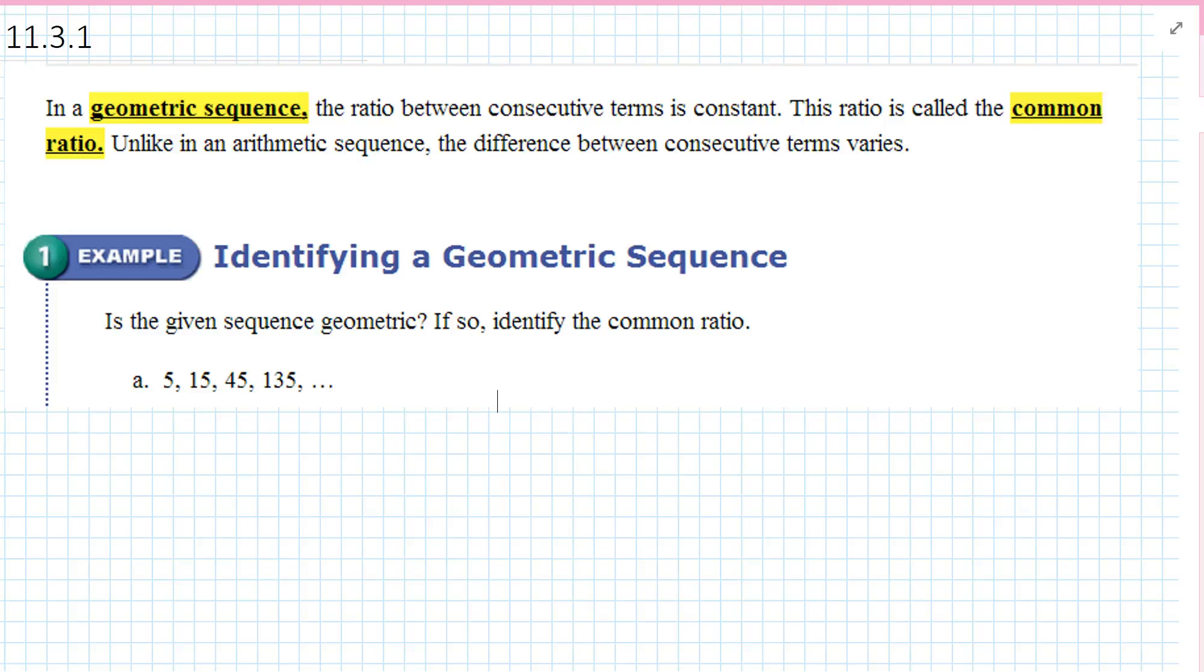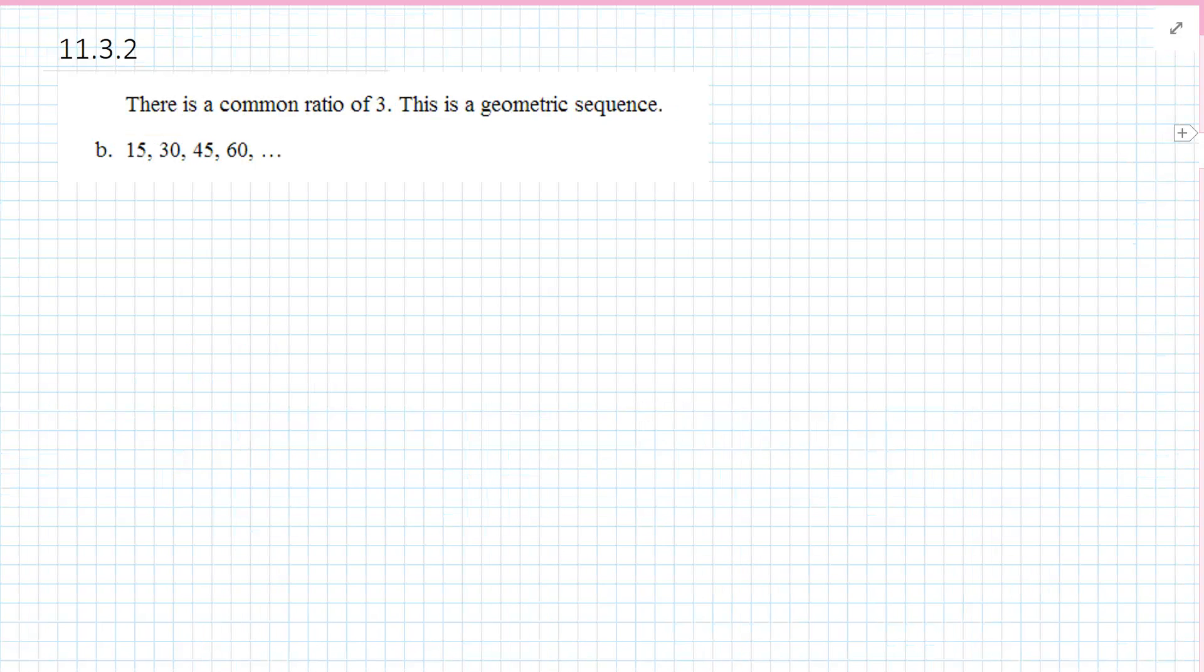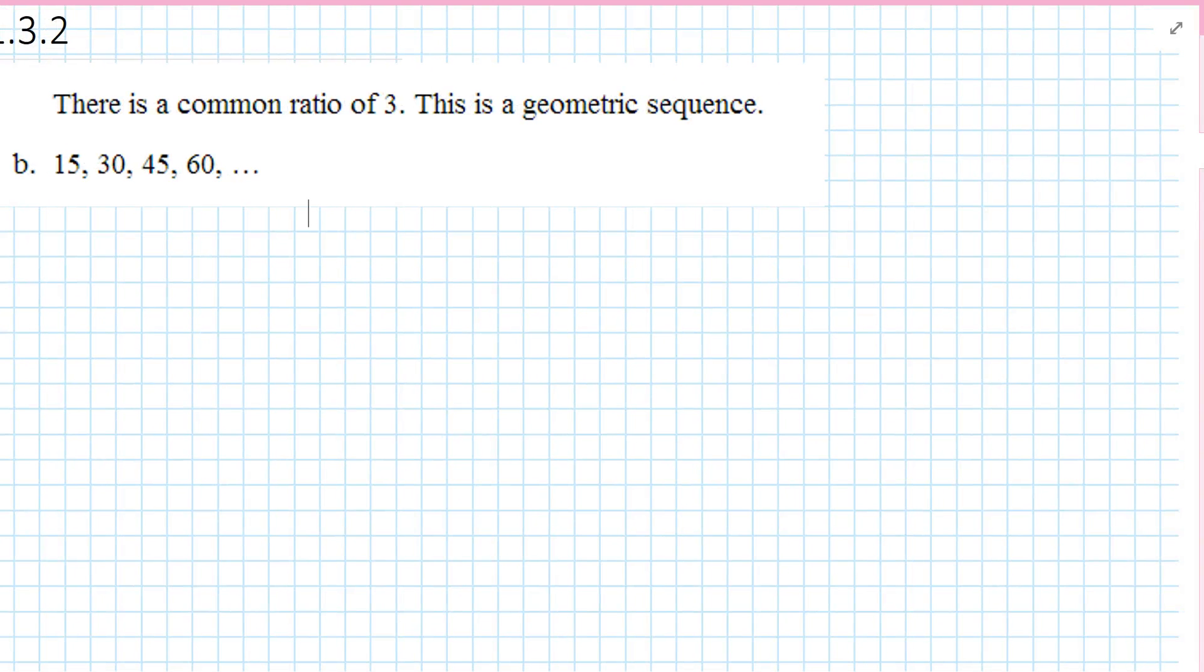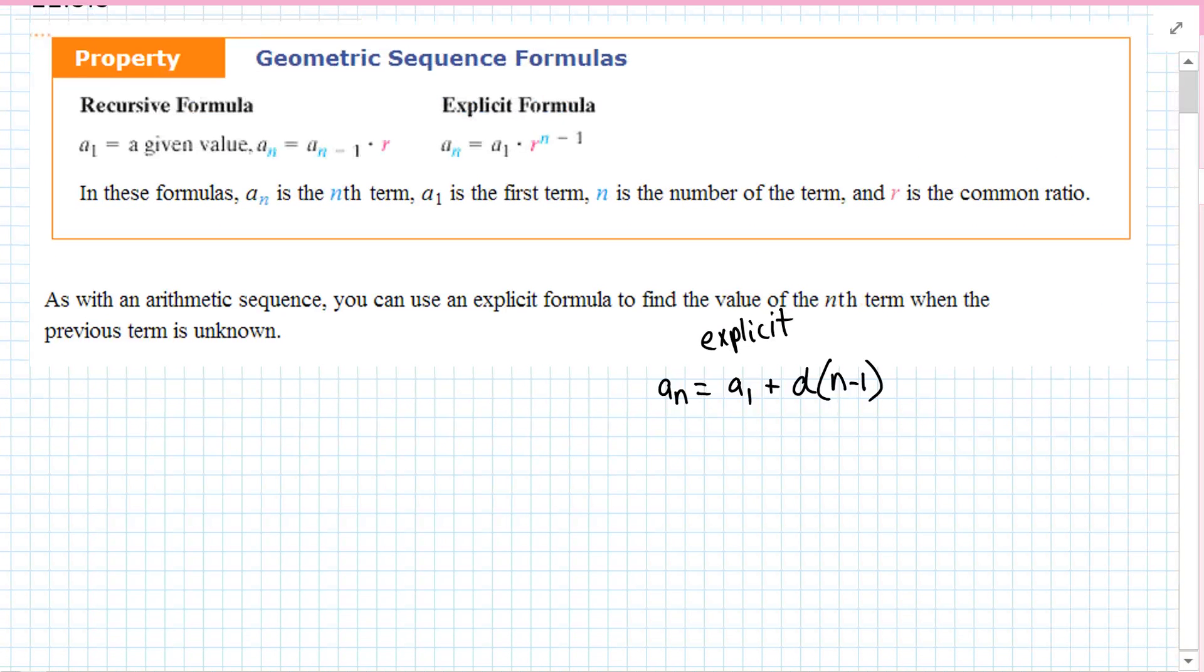Is the given sequence geometric? If so, identify the common ratio. The easiest way to do it is divide the second term by the first term, and you get 3. Divide the third term by the second term, you get 3. Divide the fourth term by the third term, and you get 3. So the answer is yes, and the common ratio is 3. This is a geometric sequence.